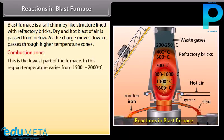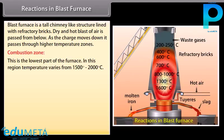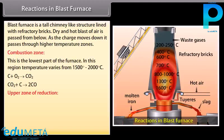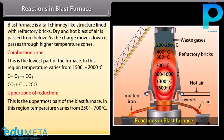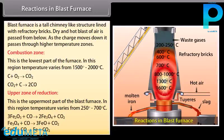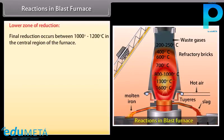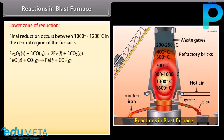Reactions in the blast furnace: The combustion zone is the lowest part, where coke burns in a hot blast of air at 1500°C to 2000°C. Carbon dioxide rises upward and meets red-hot coke. In the upper zone of reduction, at 250°C to 700°C, carbon monoxide reduces oxides of iron into spongy iron. Final reduction occurs between 1000°C and 1200°C in the central region, where carbon from dissociation of carbon monoxide combines with iron and impurities dissolve in molten iron.